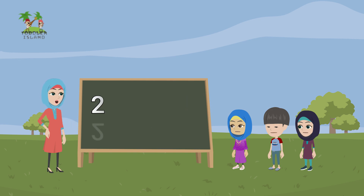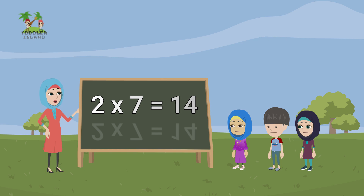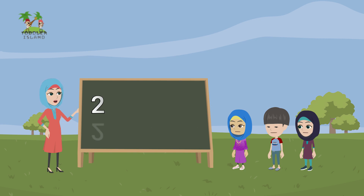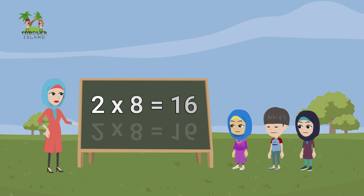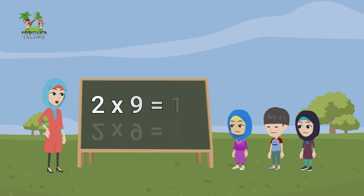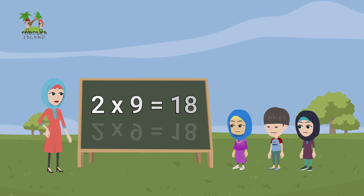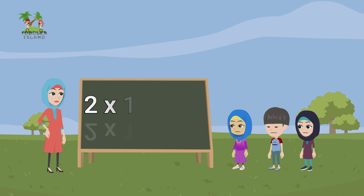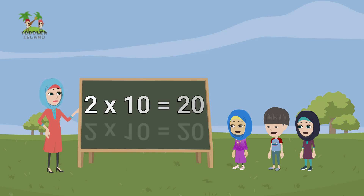Two sevens are fourteen, two eights are sixteen, two nines are eighteen, two tens are twenty.